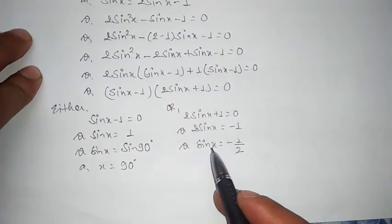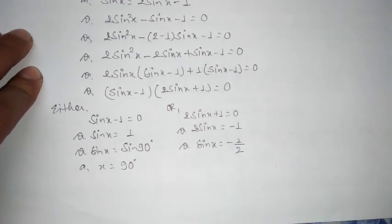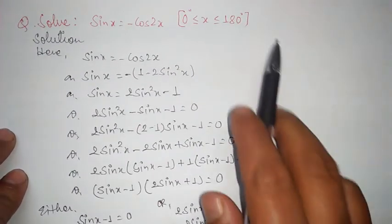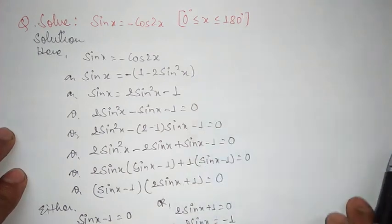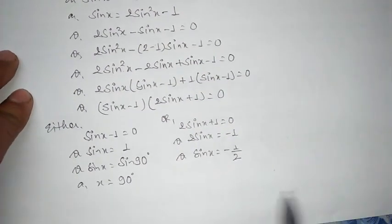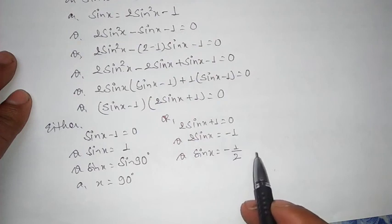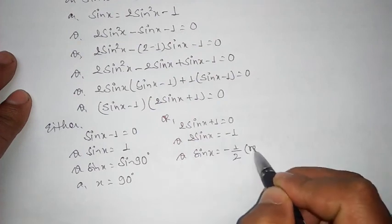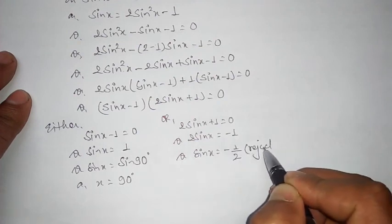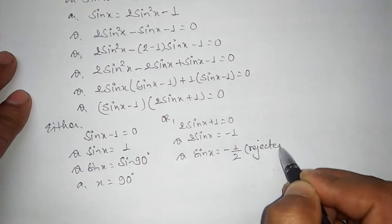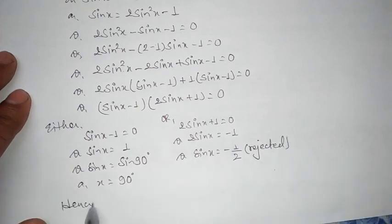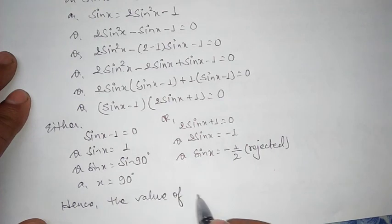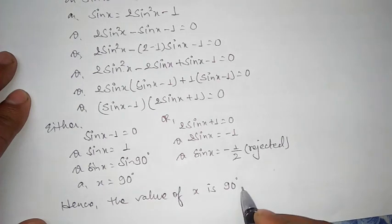See, the value of sin is negative, which means in the third quadrant and fourth quadrant the value of sin is negative. But see the range—the range is 180 degrees, meaning still second quadrant. It means the obtained angle would be of third and fourth quadrant, so this is rejected. Hence, the value of x is 90 degrees.